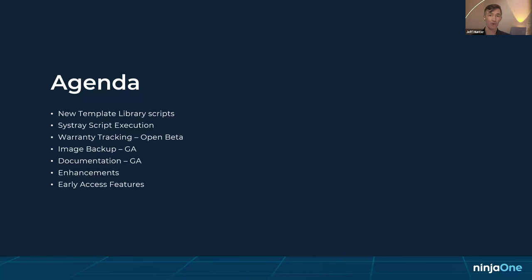We'll also talk about enhancements to image backup — a complete reimagining of how image backup works under the hood. We can now do deduplication and chainless backups, so there's no need to periodically take a full backup. We are now using immutable storage when backing up into the cloud via AWS S3, both for image backup as well as file and folder backup.